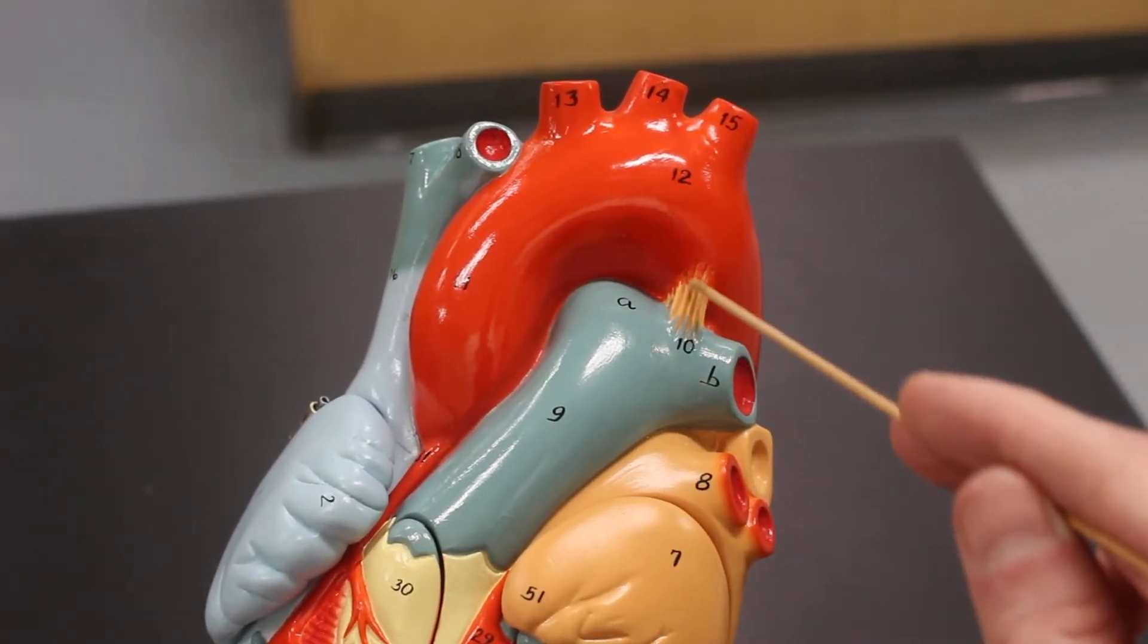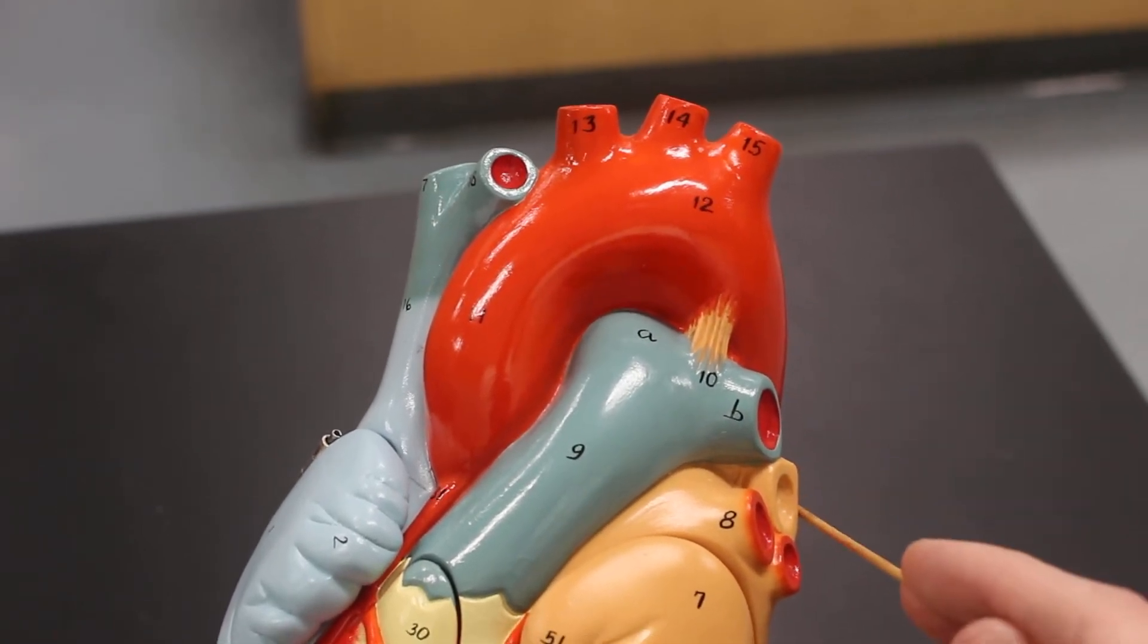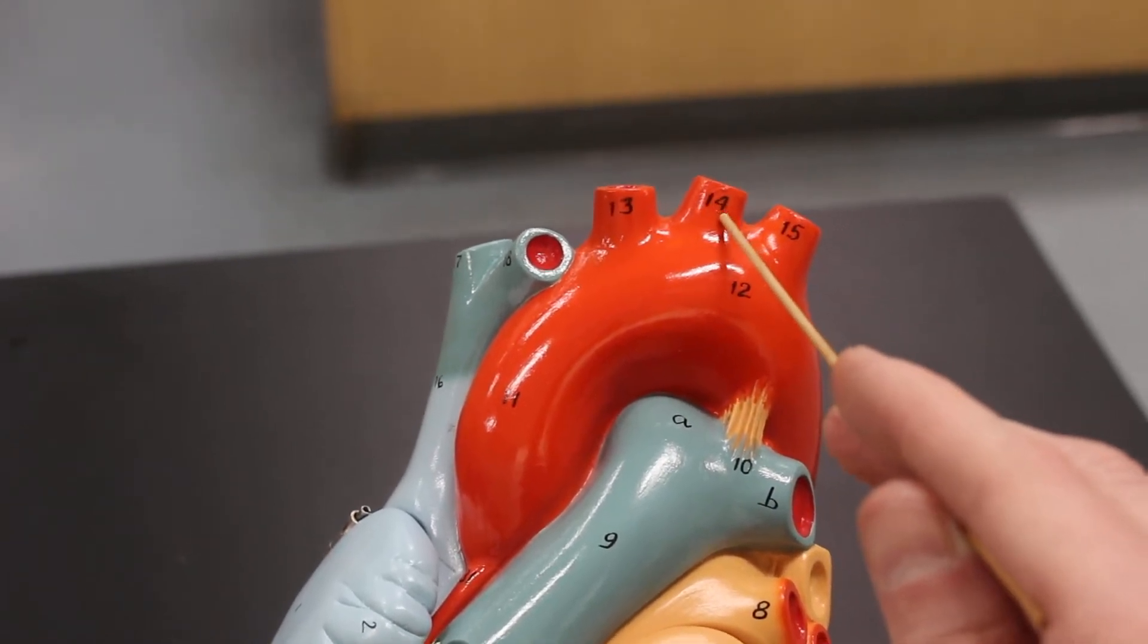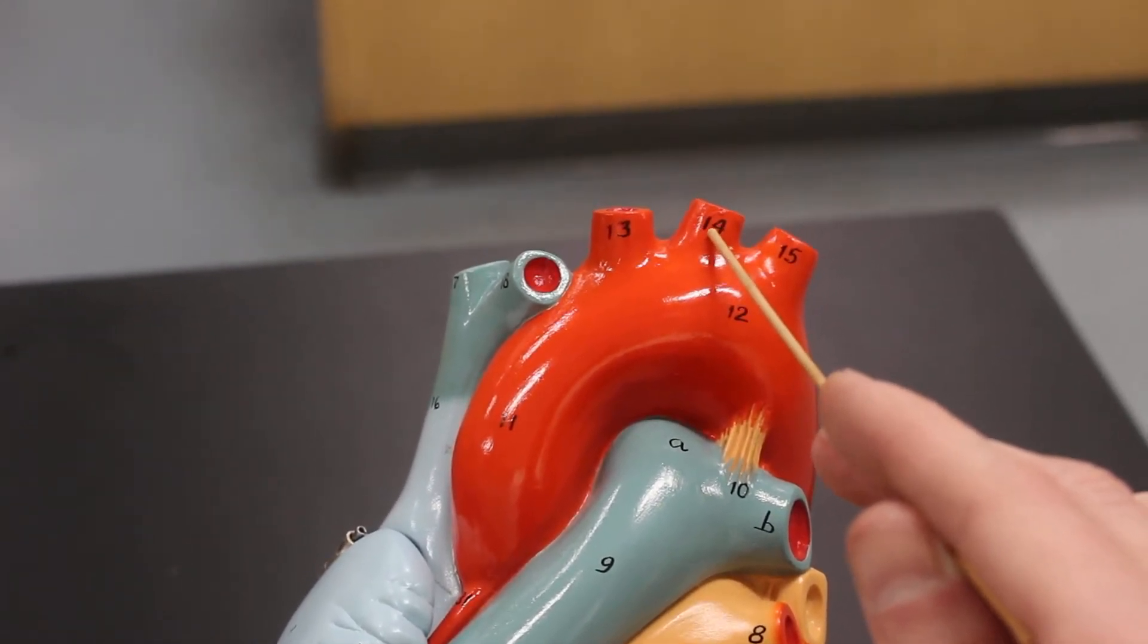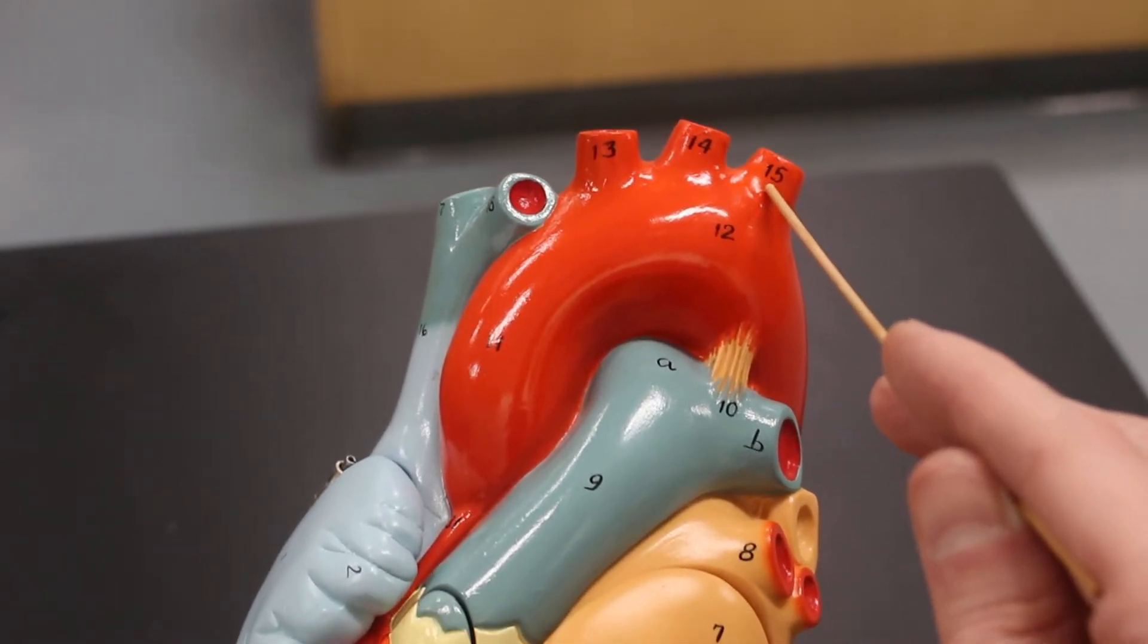We have the aorta which includes the ascending aorta, the aortic arch, and the thoracic aorta. This is the brachiocephalic trunk, the left common carotid artery, the left subclavian artery.